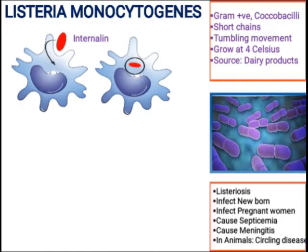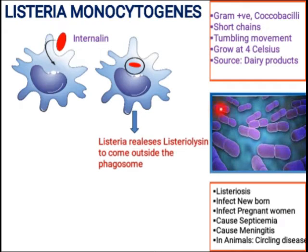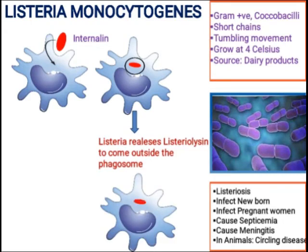When your immune cells engulf the bacteria, it is phagocytosis and the bacterium can be enclosed in an endosome or phagosome. Enzymes are released into the endosome which would normally kill the bacteria. However, Listeria monocytogenes has a specific virulence factor called Listeriolysin O protein. This Listeriolysin O protein damages and lyses the phagosome or endosome, releasing the bacterium back into the cytoplasm.